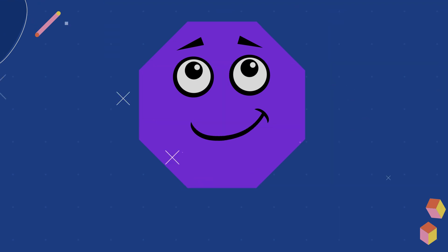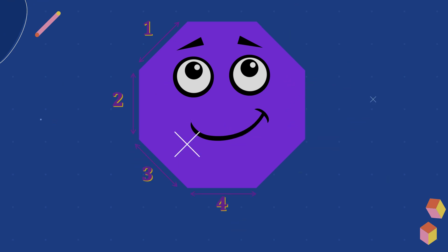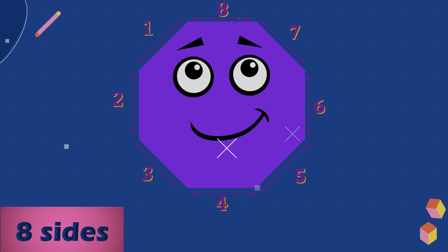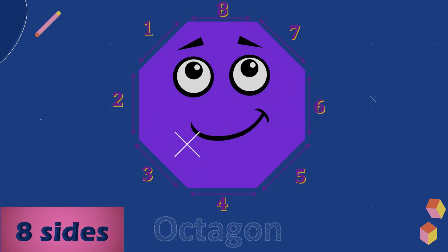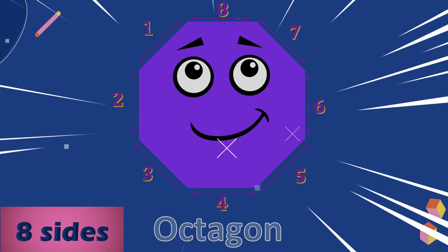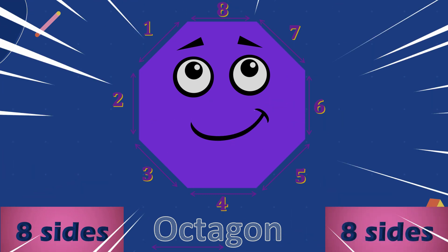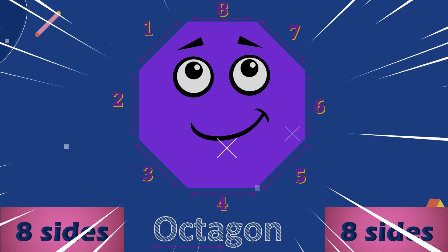One, two, three, four, five, six, seven, eight. Eight sides. Eight sides is Octagon. Octa means eight. Octagon.